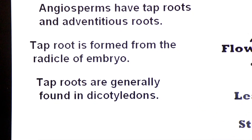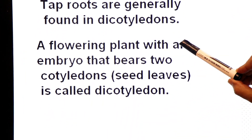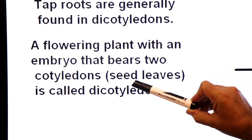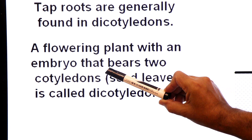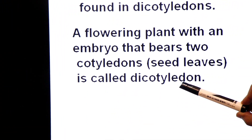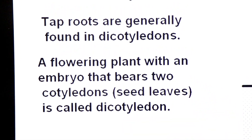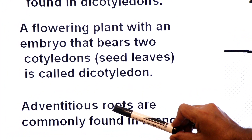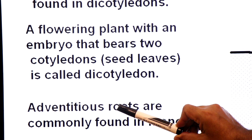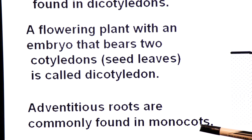Dicotyledons are flowering plants whose embryo bears two cotyledons (seed leaves). Cotyledons are seed leaves that absorb food from the endosperm and supply it to the developing embryo. Adventitious roots are those roots which do not arise from the radicle of an embryo; they usually arise from the stem and are commonly found in monocotyledons.